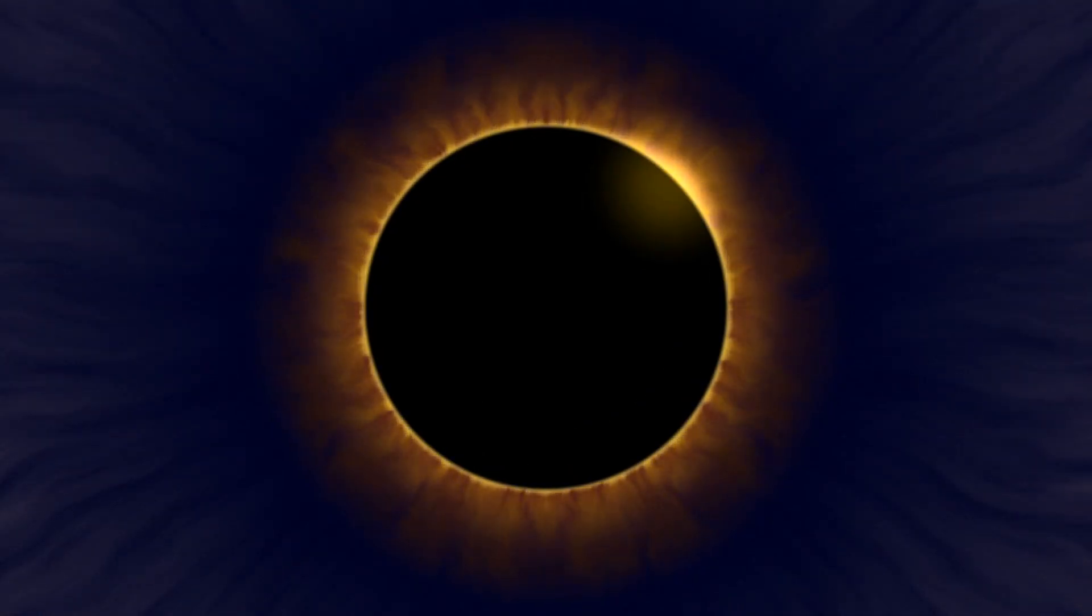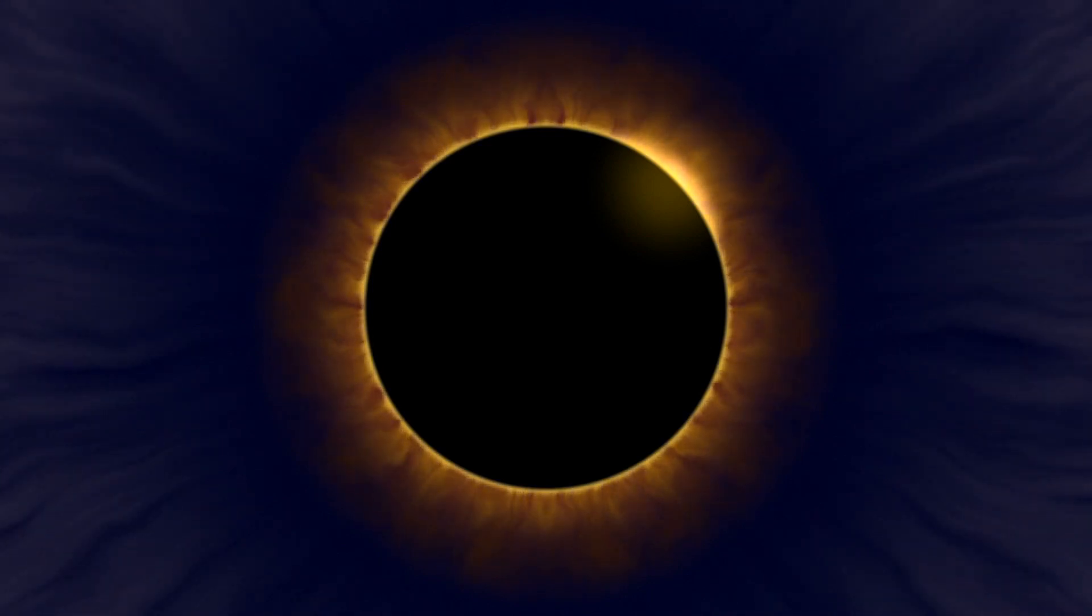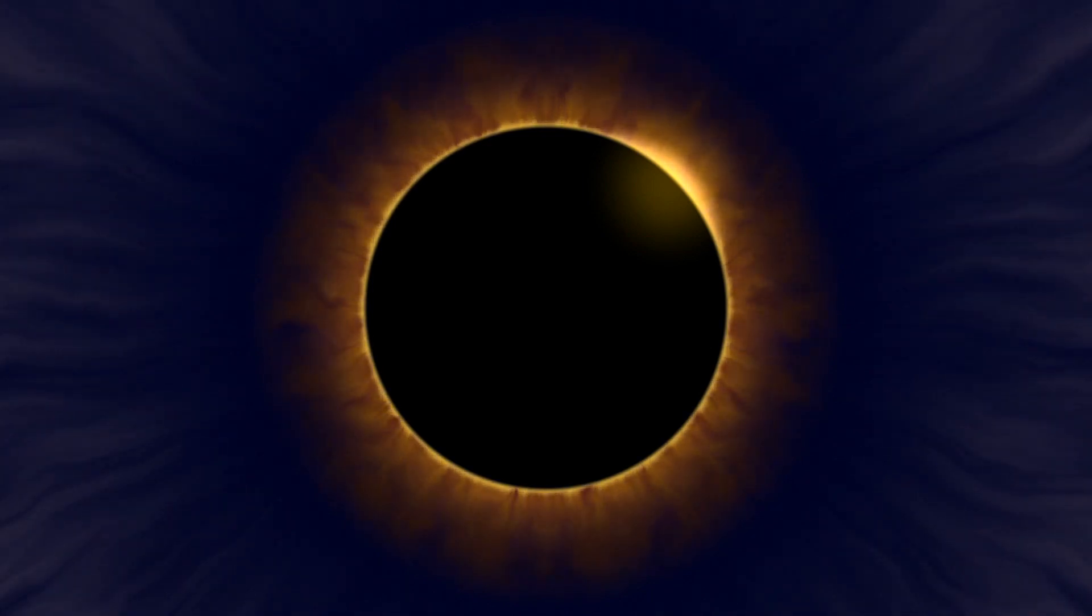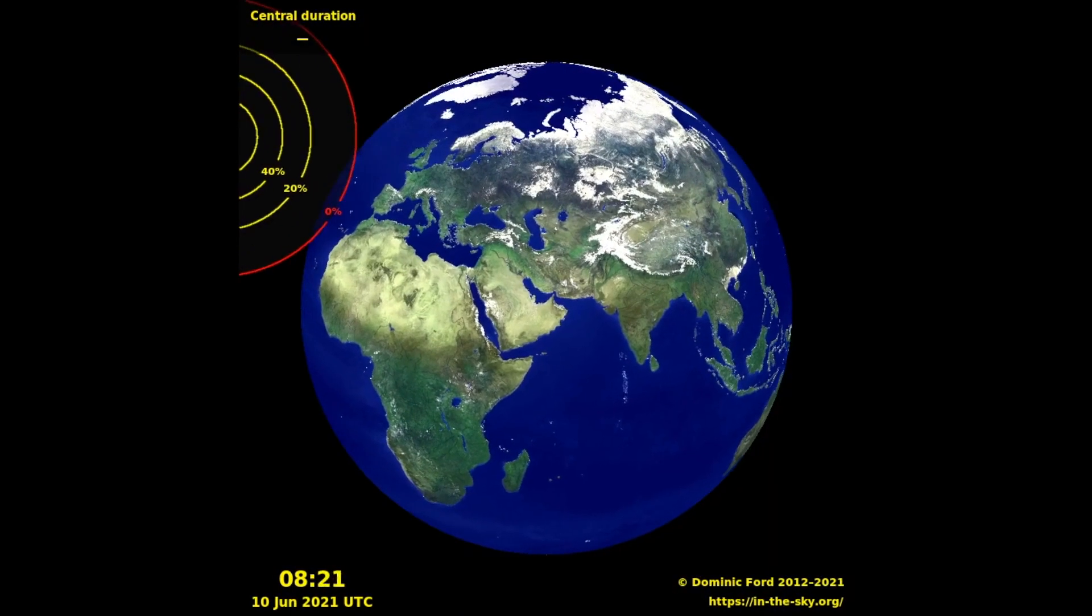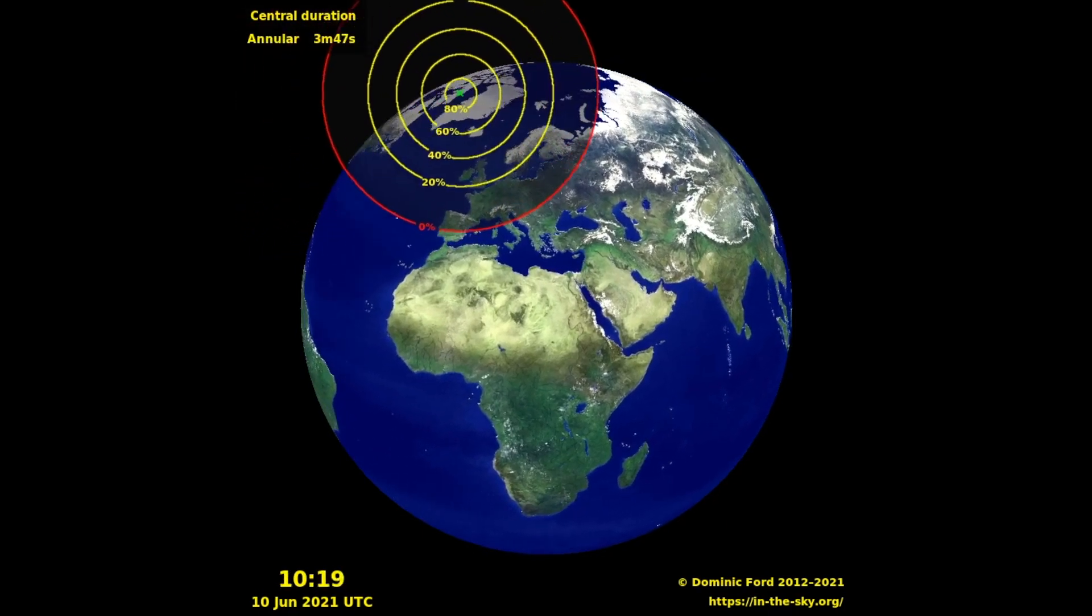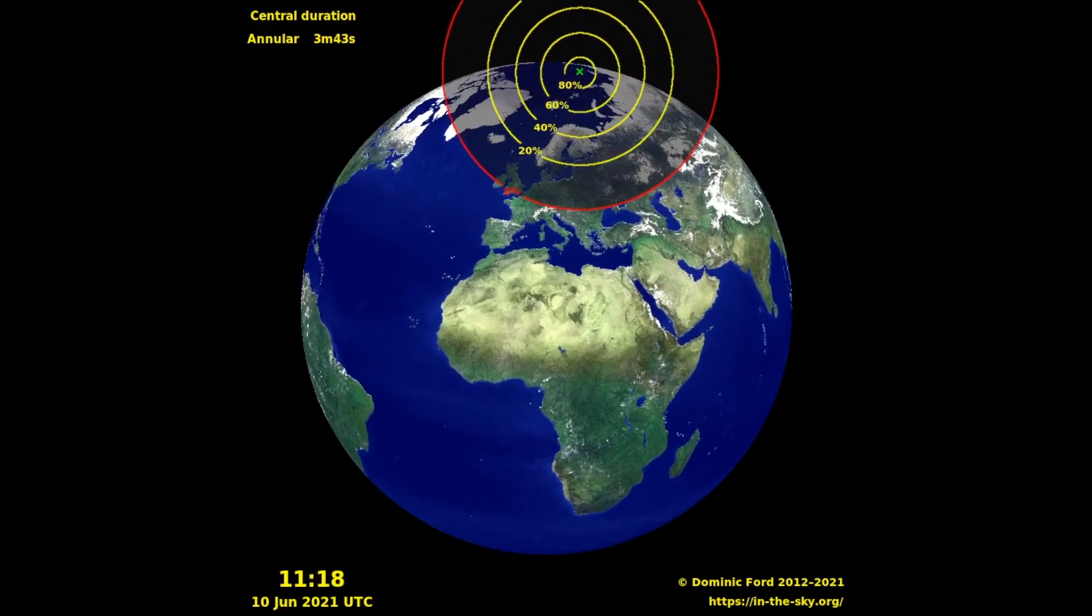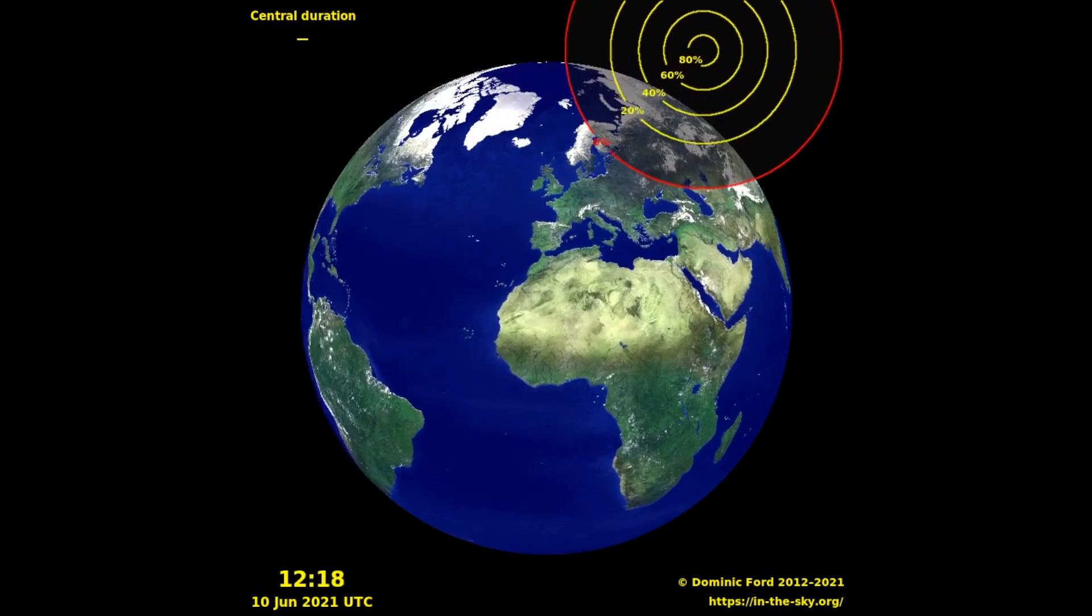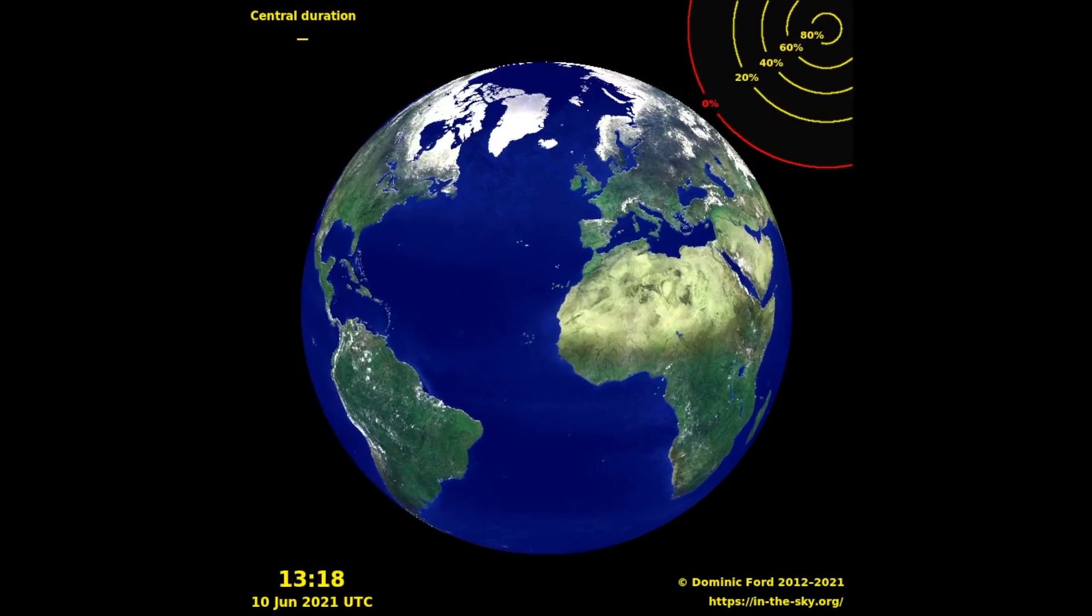The most exciting event of June without a doubt will be the annular solar eclipse. The moon will fully obscure the sun's disk, creating a ring of fire. The animation projects the path of the moon's shadow onto a map of the world. The red contour shows the edge of the moon's shadow and encloses everywhere where the eclipse can be seen.